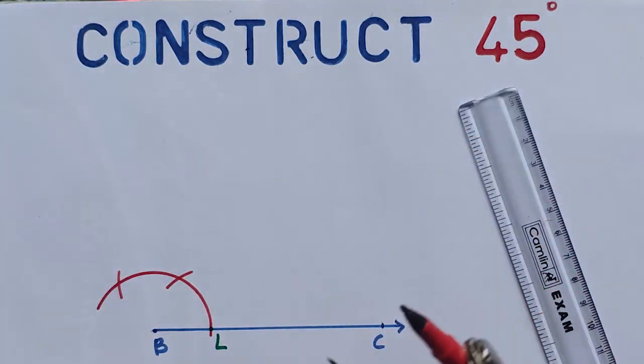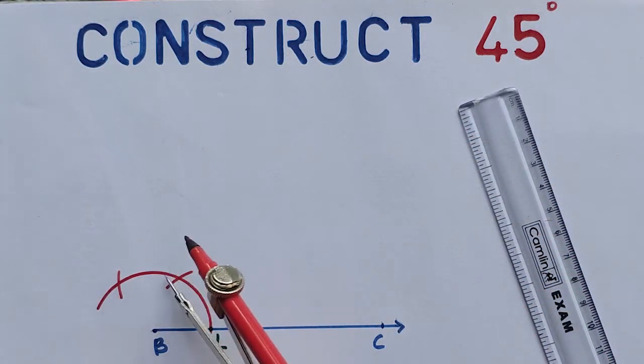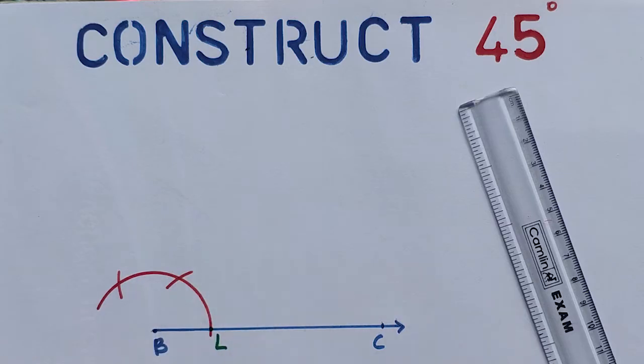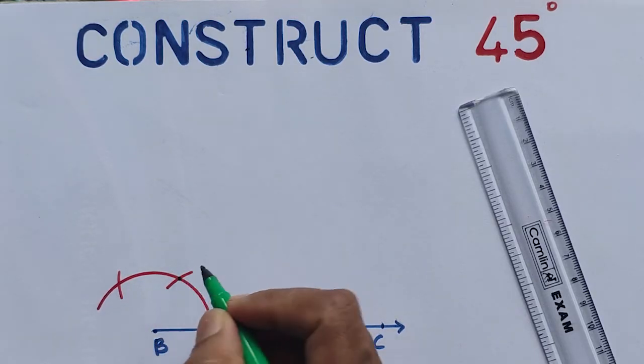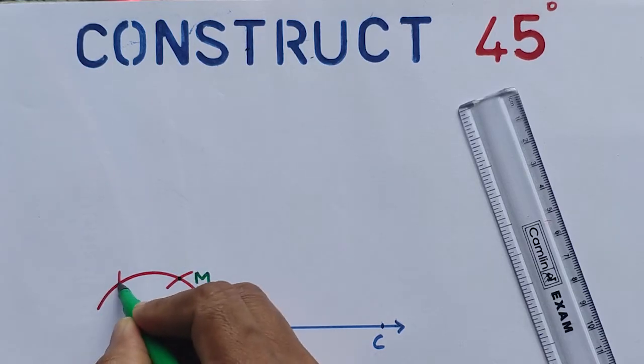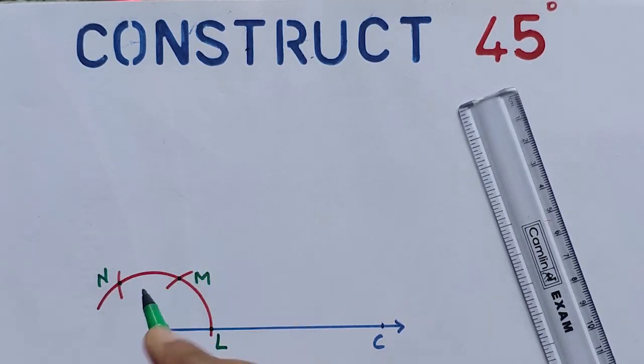Then if we bisect the second part, we will get 90 degrees. So this point is M and this point is N. If we bisect MN, we will get 90 degrees.